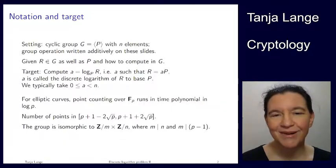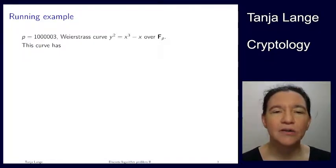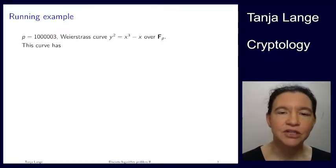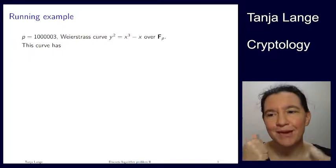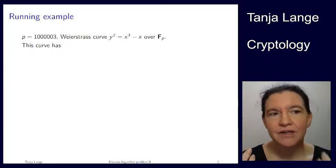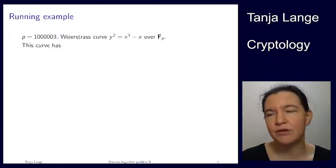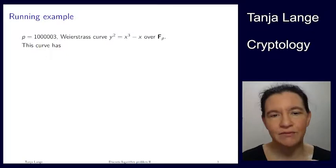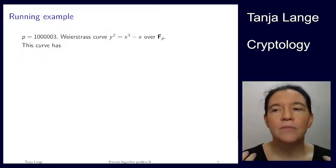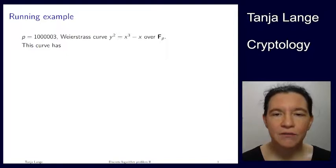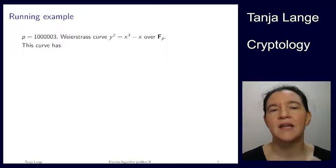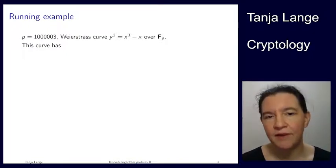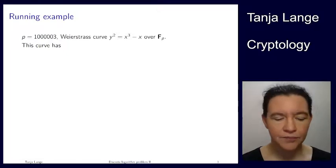We're actually going to see a motivation why we want to work in even a smaller subgroup, namely something with a point P generating a group of order that is a prime. As our running example, which by what I just said will be a very bad example, we're going to look at this curve. For attacks, I'm going to use a Weierstrass curve, not just because Edwards curves are so nice you can't possibly attack them. They are birationally equivalent. So if you can break one, you can break the other.